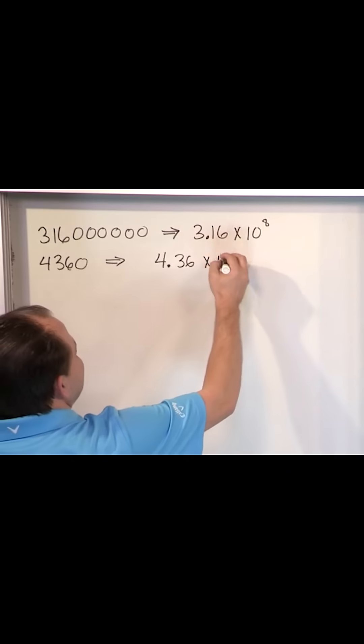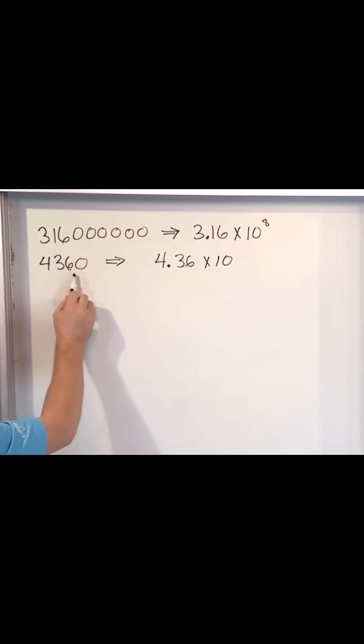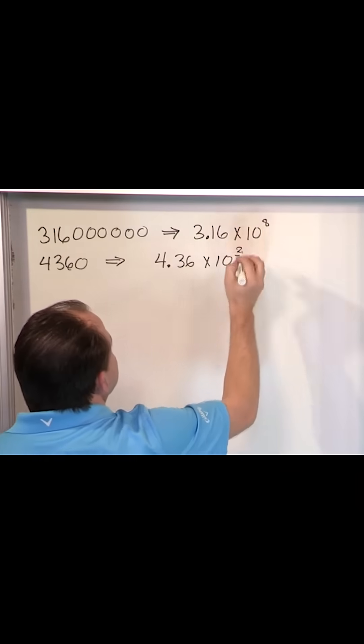And then I have to write times ten, and then I just count. If the decimal were here, it would be one, two, three places. So times ten to the three.